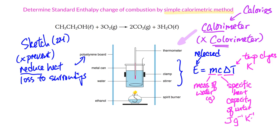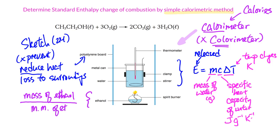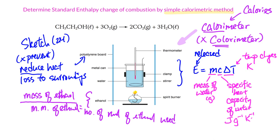The lower part of the setup is easy to understand. We have ethanol, and in the process we keep burning the ethanol, so we expect the mass of ethanol to go down. If we burn, say, 10 grams, then we can find out how many moles have been used — mass of ethanol divided by the molar mass of ethanol. By knowing the number of moles of ethanol used and how much the temperature has risen, we can calculate the energy released. Using these two data points, we can find out the standard enthalpy change of combustion.